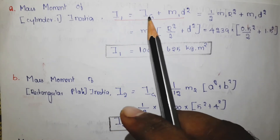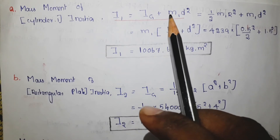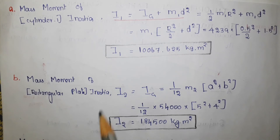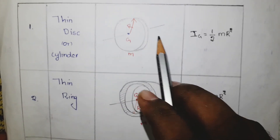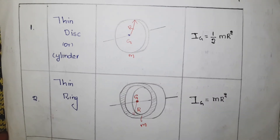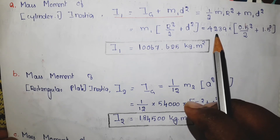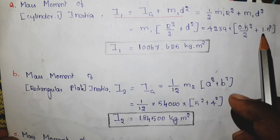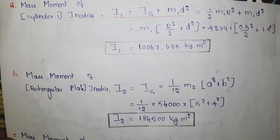Here Ig is the mass moment of inertia of the cylinder about its own perpendicular axis, m1 is the mass of cylinder one, and d is the distance between the AA axis and the axis passing through the center of gravity of the cylinder. The formula for Ig is m times r squared divided by 2. Substituting m1 = 4239, radius r = 0.5 m, and distance d = 1.5 m, and calculating, the answer is I1 = 10,067.625 kg·m².